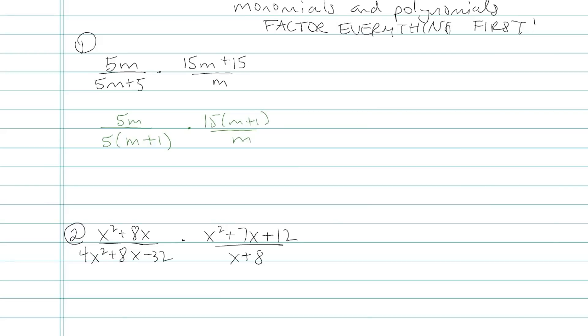I can cross out factors that are the same on top and bottom, like that m plus 1. That's the same on top and bottom. It's okay that they're in different fractions. I also have a 5 over 5, and I have an m over m. So all that's left is just that 15. That's it.